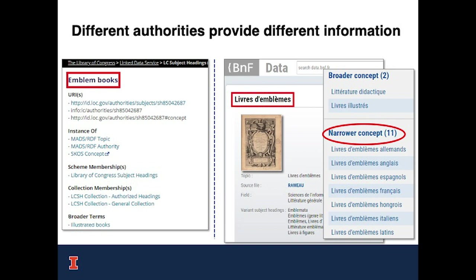Another example: in LCSH, we found that the term 'emblem books' doesn't have narrow terms such as 'emblem books Latin' or 'emblem books German.' But this hierarchy exists in BNF subject authorities in French. So authorities have things they are better at, and using authorities in combination is better than over-reliance on single authorities. This study suggests that leveraging links between authority records can help enhance user services. With that, I'll hand it over to Greta to talk about analysis of linked data authorities.